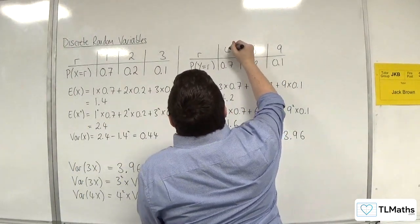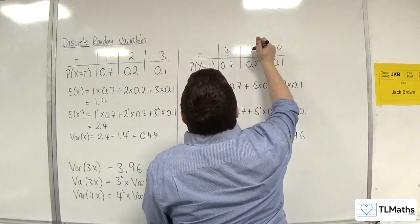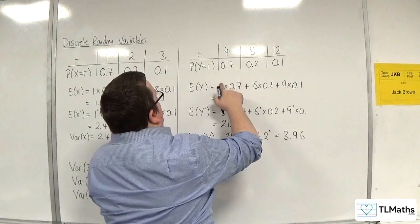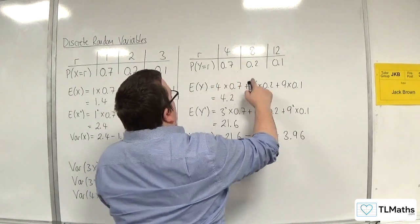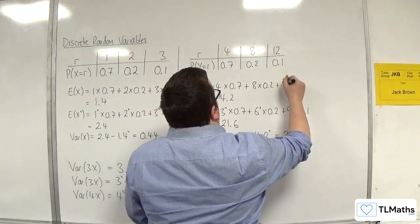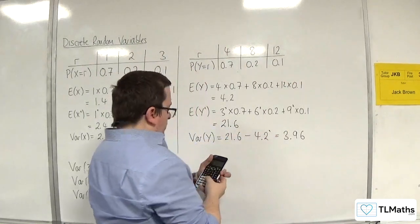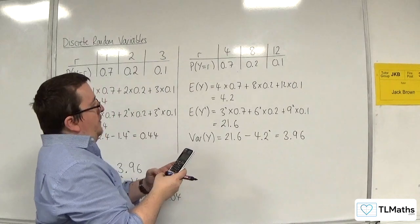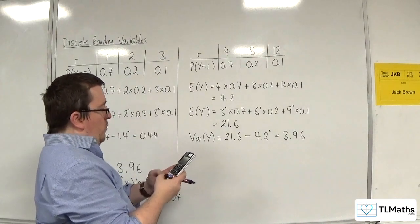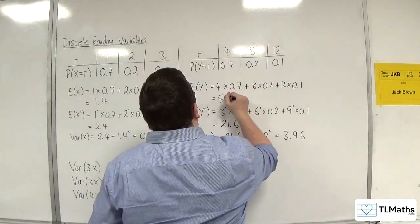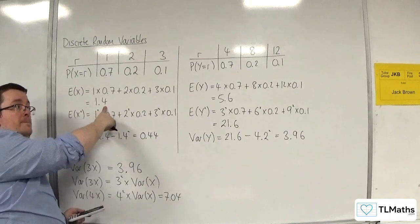That will become 4, 8, and 12. So I now have 4, 8, 12. So 4 lots of 0.7 plus 8 lots of 0.2 plus 12 lots of 0.1, and that gets me 5.6, which again will be because I've got 4 lots of 1.4 here.